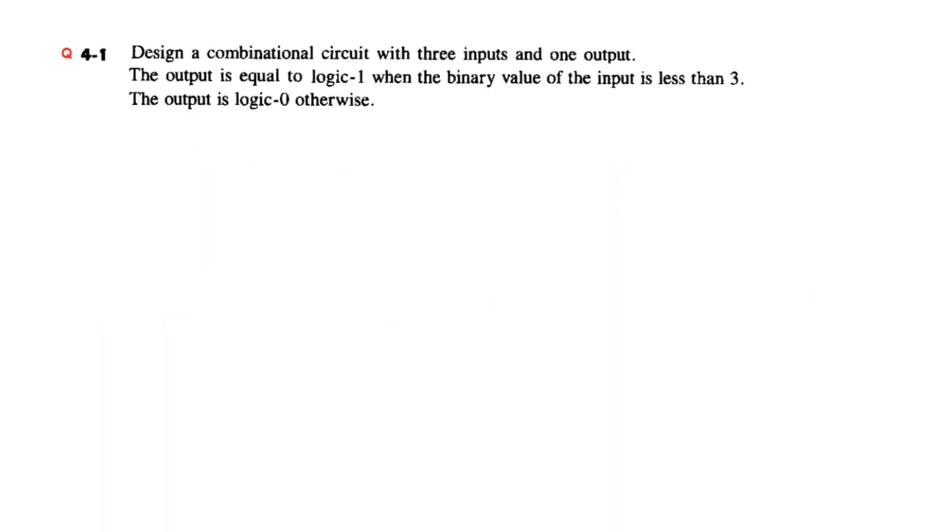Finally, one simple example, question number 4.1: Design a combinational circuit with three inputs and one output. The output is equal to logic-1 when the binary value of the input is less than 3, and the output is logic-0 otherwise. Let's see how to implement this in terms of a truth table.